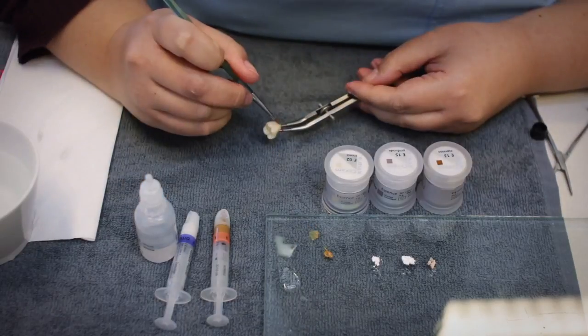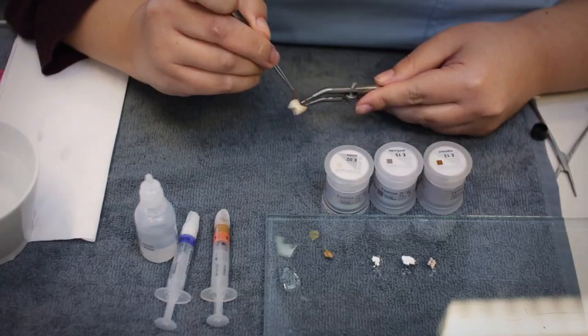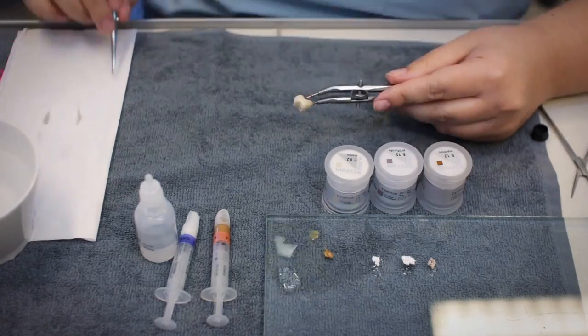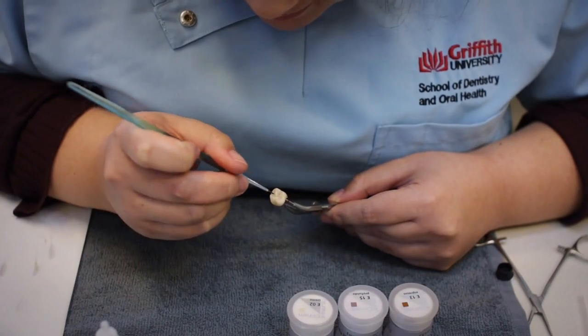After glazing, stains are used to create unique characteristics on the occlusal surface. Dark stains are placed in the fossa and lighter stains are used to highlight the ridges.